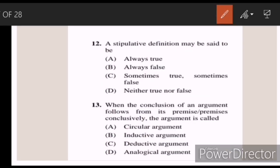Twelve: a stipulative definition may be said to be — Answer D — neither true nor false. Thirteen: when the conclusion of an argument follows from its premises conclusively, the argument is called — Answer C — a deductive argument.